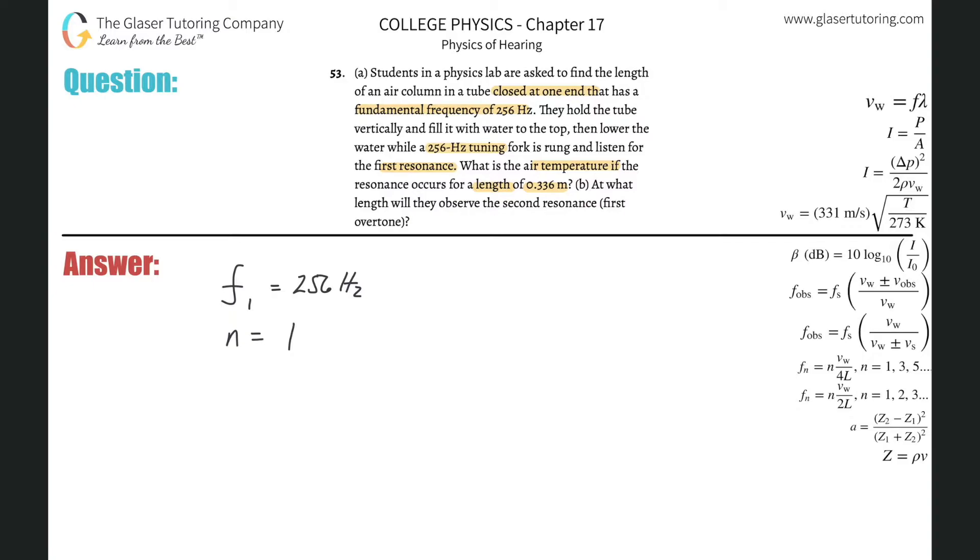And check out number 42, I talk about some general concepts here for these problems. It also tells us that the length of the tube here is going to be 0.336 meters. And they're asking us for the air temperature. They tell us also that the tube is open at one end, which would mean that it's closed at one end, meaning the other end.